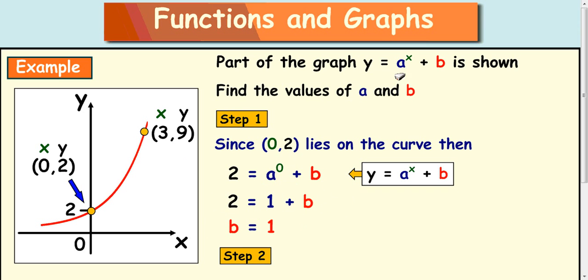If we put the 3,9 into this, we'd have 9 equals a cubed plus b. And we'd be no further forward because we couldn't work out what a cubed was. So always use this coordinate because you'll get a to the power of 0 and you can work out what that is, as it's always 1.